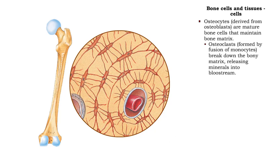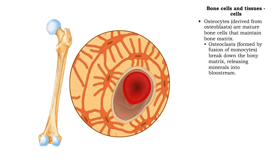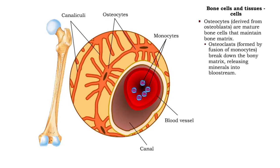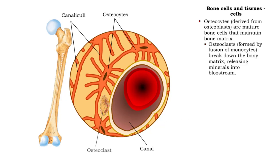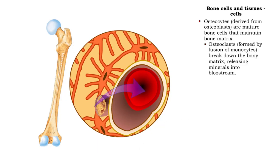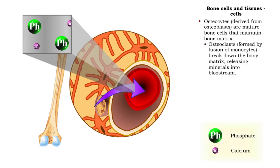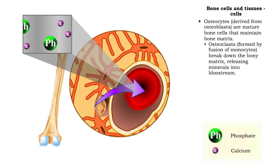Osteoclasts are large cells formed by the fusion of monocytes. During resorption, these cells release lysosomes through a ruffled border that break down the bony matrix, releasing minerals, such as calcium and phosphates, into the bloodstream.